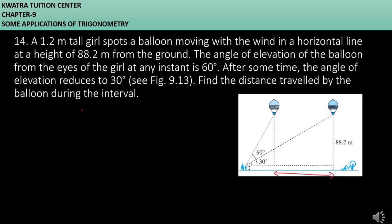The height of the girl is 1.2 meters. We have to minus this height so that the elevation is from the top of the girl to the balloon. So it will be 88.2 minus 1.2, which is 87 meters.